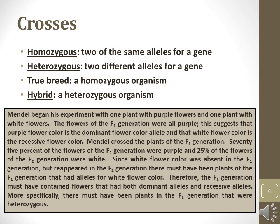Gregor Mendel was one of the first people to study how the traits of living things are inherited in different ways, although Mendel was unaware of the existence of DNA and discovered genetics independently. By controlling the breeding patterns of pea plants, Mendel developed methods that could be used to identify the dominant traits that are observed and the recessive traits that are hidden.